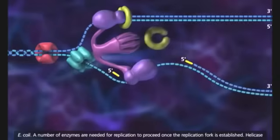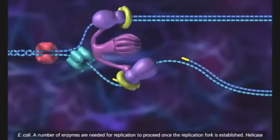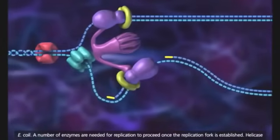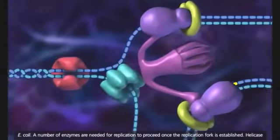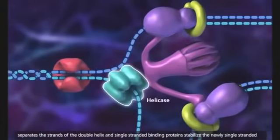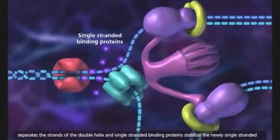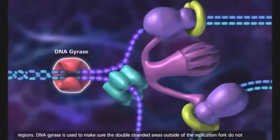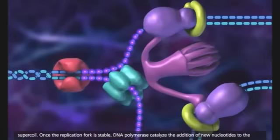A number of enzymes are needed for replication to proceed once the replication fork is established. Helicase separates the strands of the double helix, and single-stranded binding proteins stabilize the newly single-stranded regions. DNA gyrase is used to make sure the double-stranded areas outside of the replication fork do not supercoil.